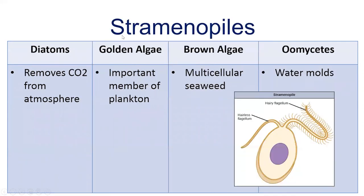The stramenophiles have four subgroups: diatoms, golden algae, brown algae, and oomycetes. Importantly, diatoms are the ones that remove CO2 from the atmosphere. Golden algae are important members of plankton. Brown algae is just multicellular seaweed, and oomycetes are water molds. Here's a stramenophile that demonstrates how they have two types of flagellum — hairy and smooth.